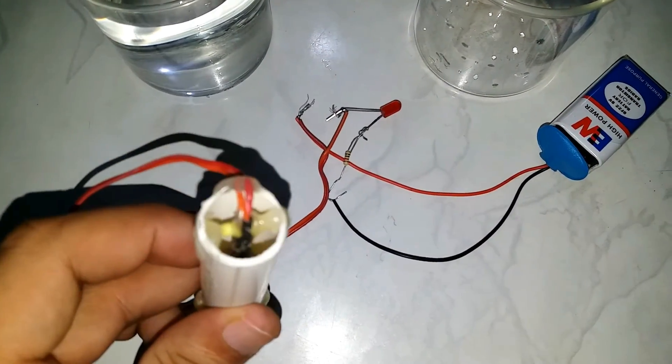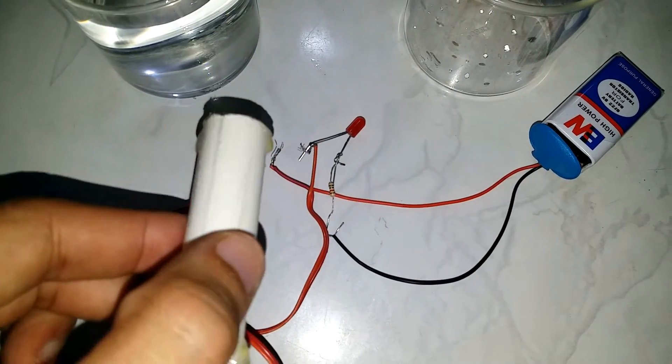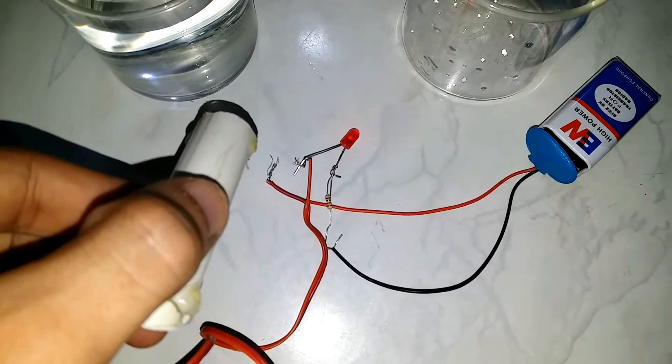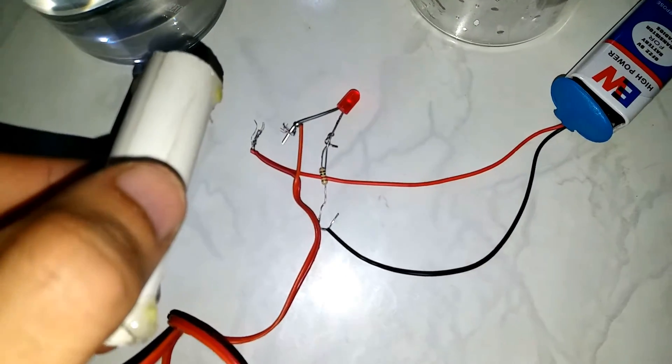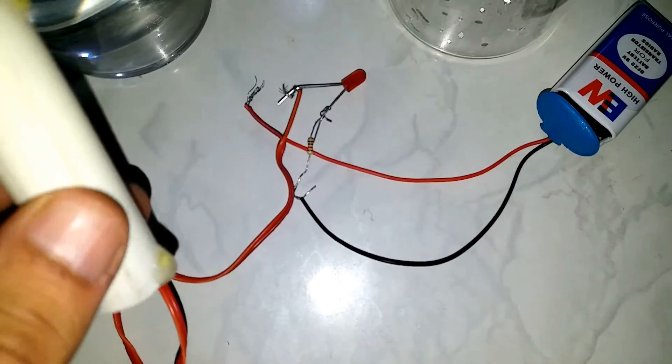Now how it will work? Like if the sensor will float, the magnet will float, it will touch and the LED will blink.